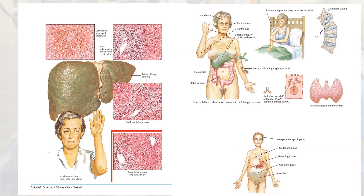The end result, as you see here, will be liver cell failure manifestations: hepatic encephalopathy, spider naevi, bleeding varices, caput medusae, and ascites. It is also associated with other autoimmune conditions like hypothyroidism, Sjögren's syndrome, and rheumatoid arthritis.